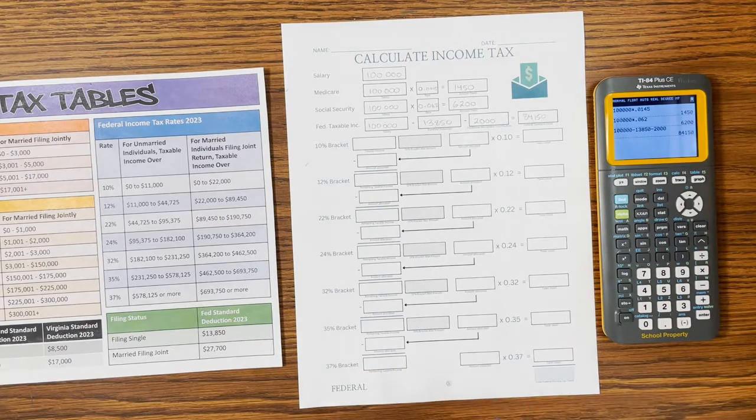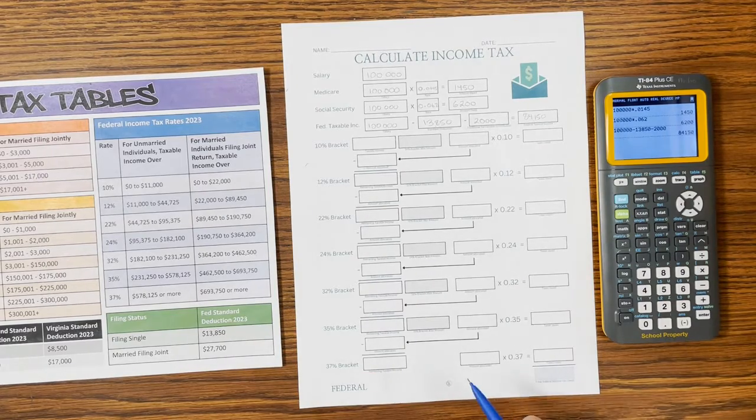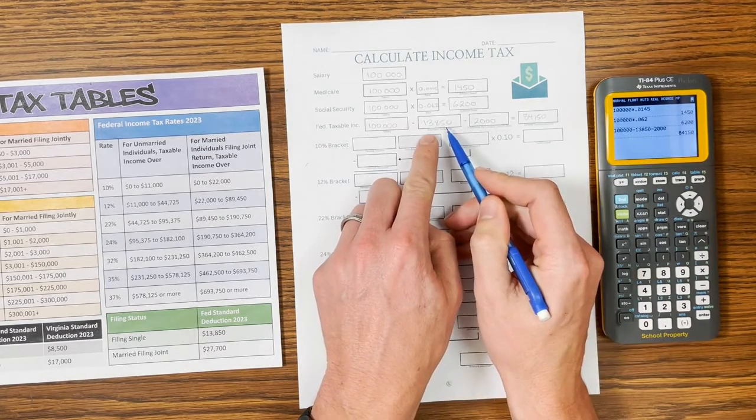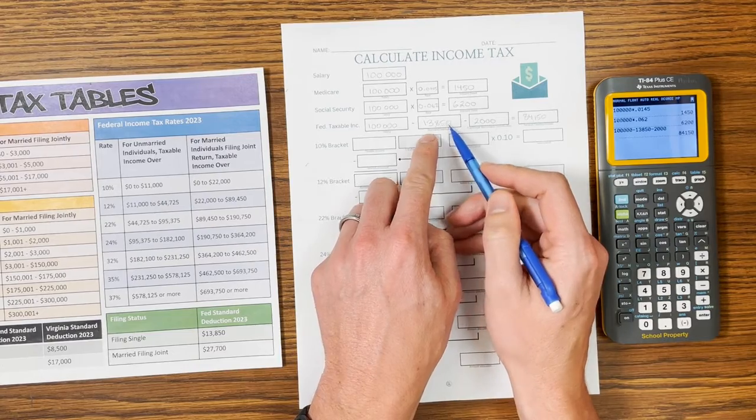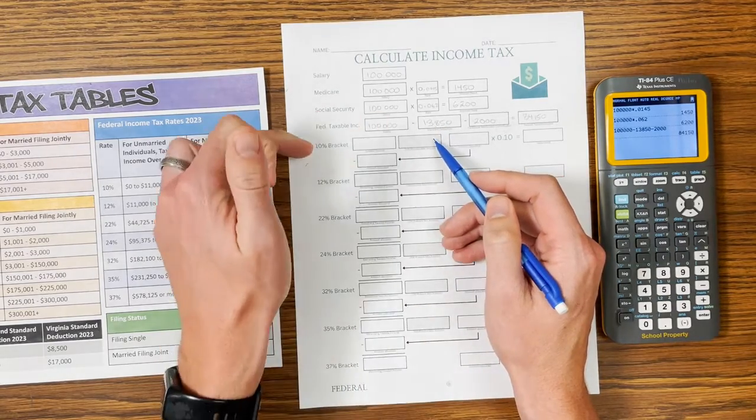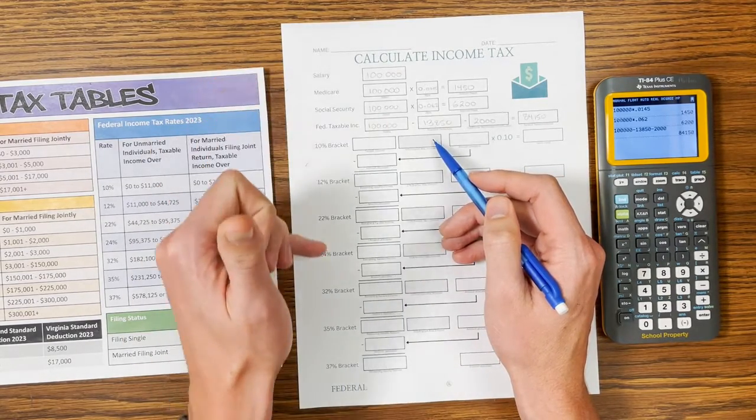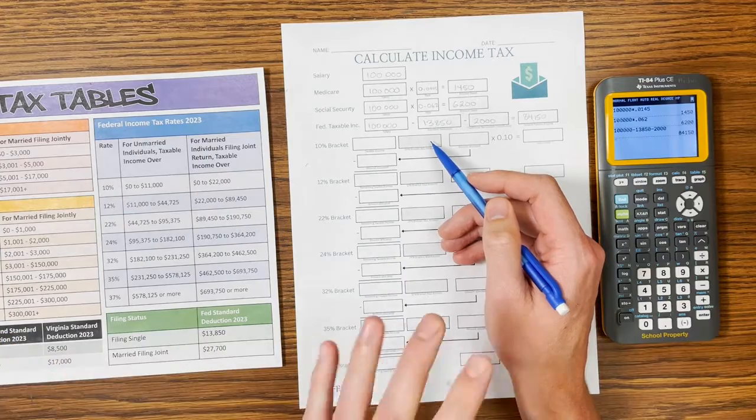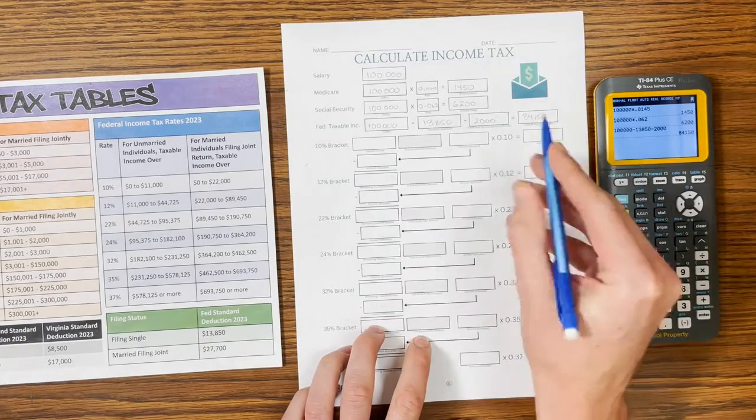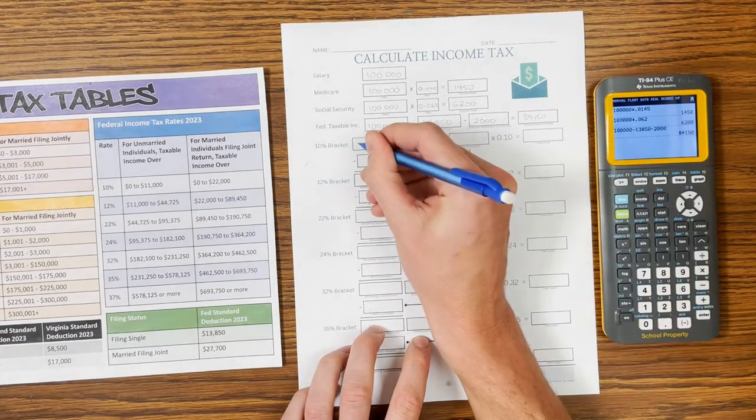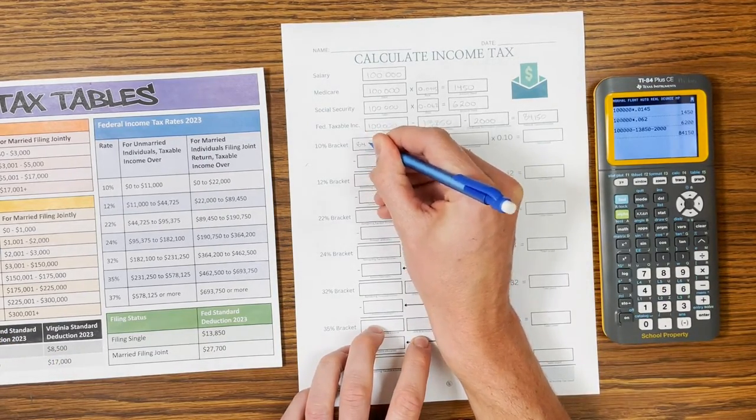Then we now go into our progressive tax system. So we've taken out the standard deduction, which is the amount you're allowed to make before tax. Now we start filling up the brackets from the 10% all the way up until there's no money left to go into it. So our taxable income is $84,150.